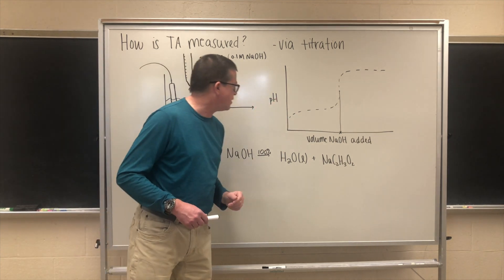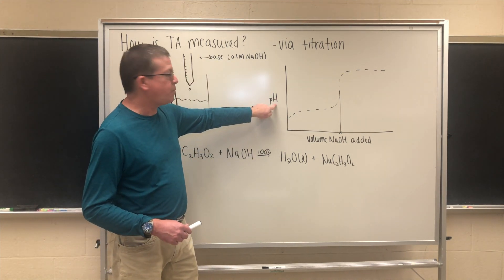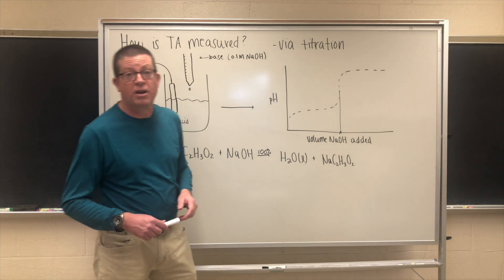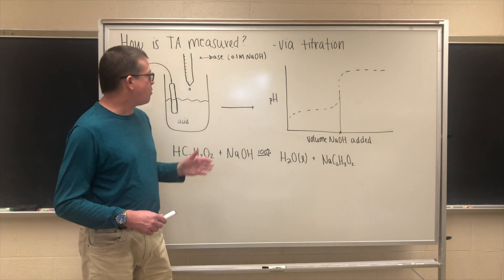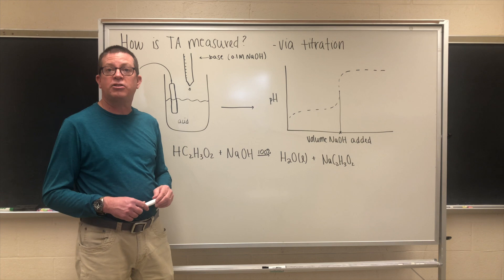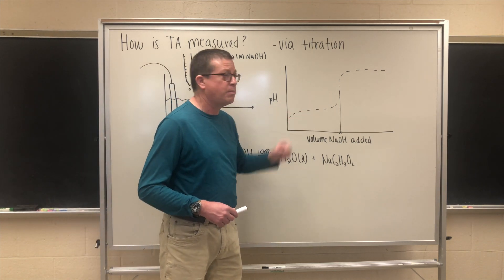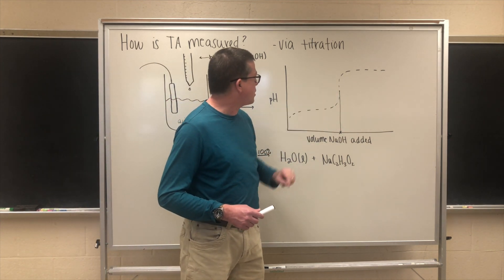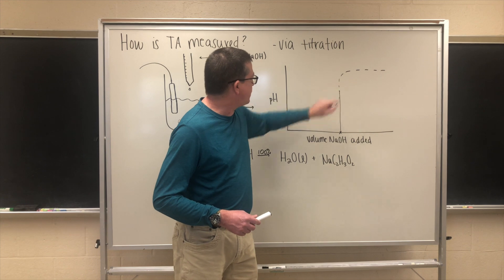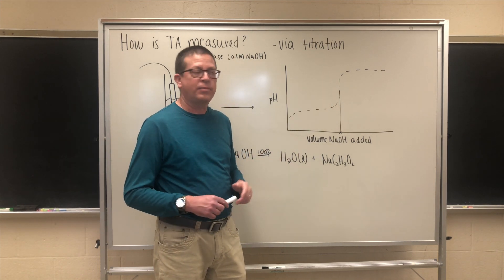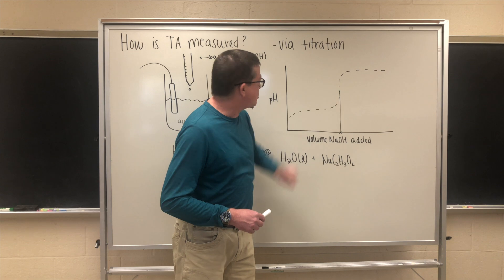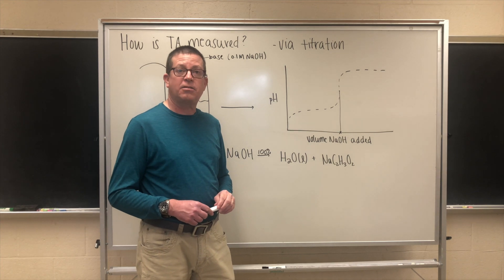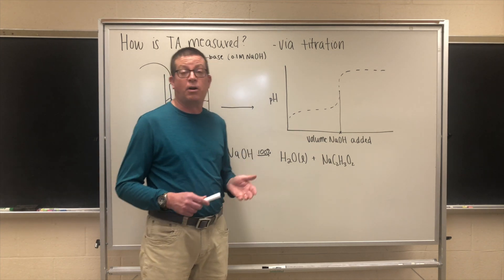We're going to plot the measured pH on the y-axis against the volume of the base or sodium hydroxide that we add on the x-axis. As we progress through the titration, eventually the pH will rise because we're starting to neutralize the acid. Eventually we will reach what's called the equivalence point, which comes to the inflection point of the pH plot. This inflection point is important because if we drop a vertical line down to the volume axis, it tells us the exact volume of the base that we needed to use up all of the acid in solution.